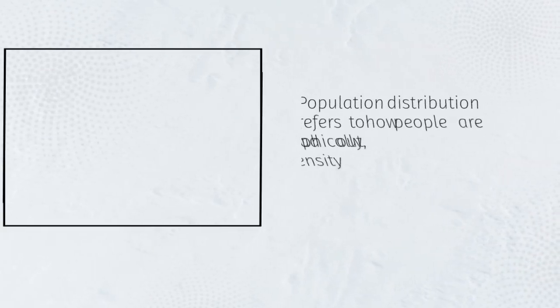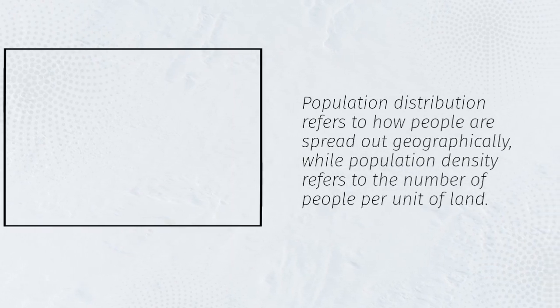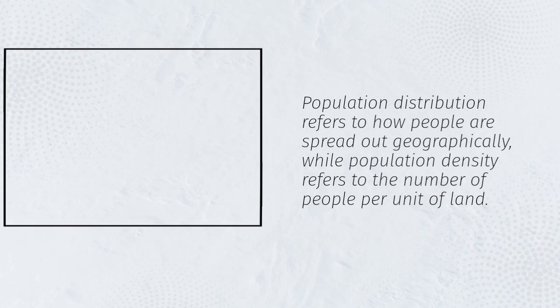Population distribution refers to how people are spread out geographically, while population density refers to the number of people per unit of land.